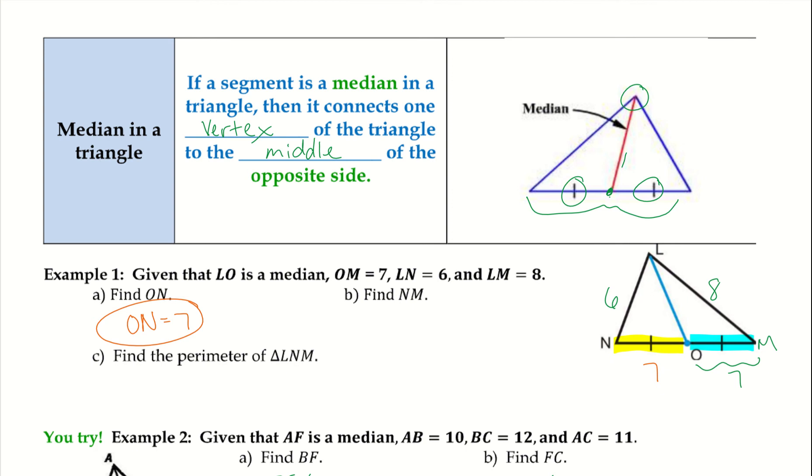Now we're trying to find NM, so that is this entire side. NM is this entire side, so all we need to do is now add up the two individual sides and put them together which 7 plus 7 equals 14.